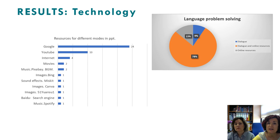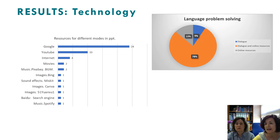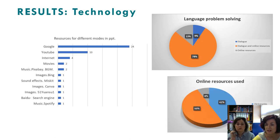Very interestingly, students used technology mainly to solve language problems, but most of them — 78% — used computer resources or technological tools during their dialogues. This means they were talking at the same time as using technology, which is referred to as translanguaging.